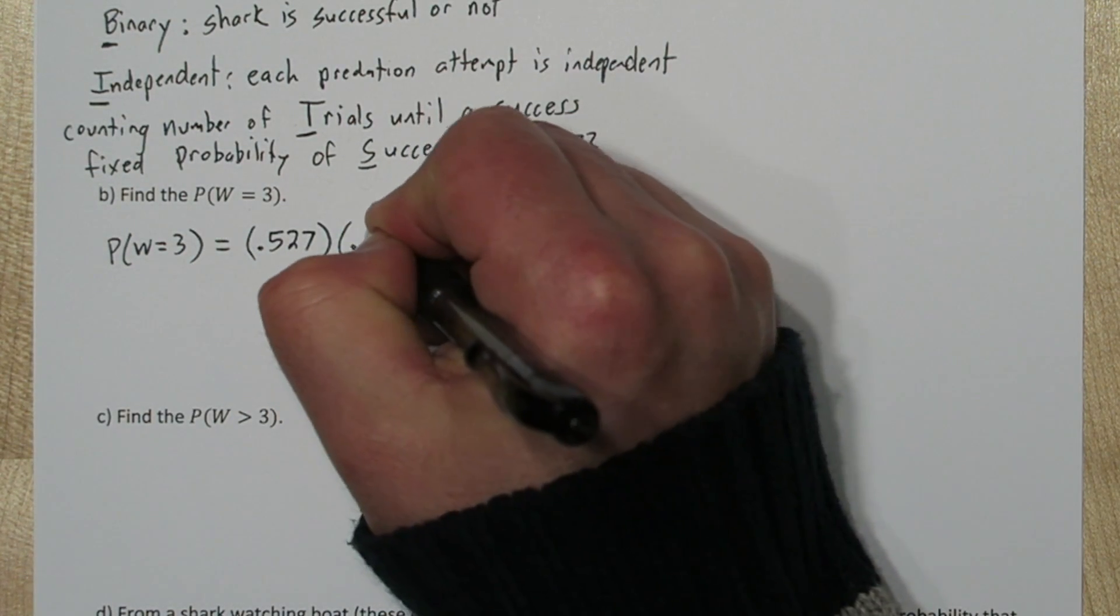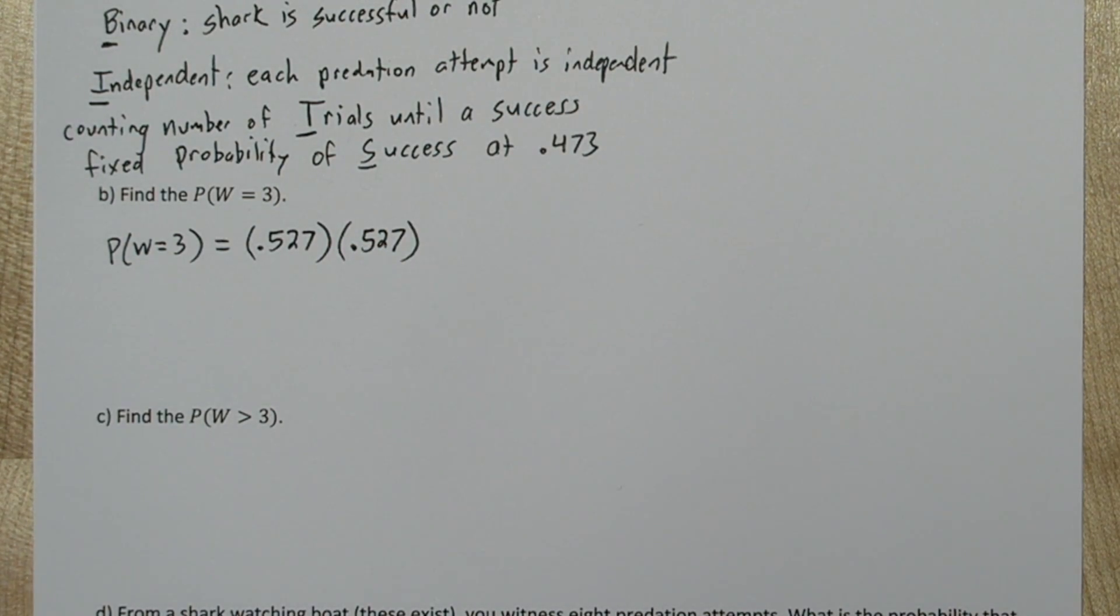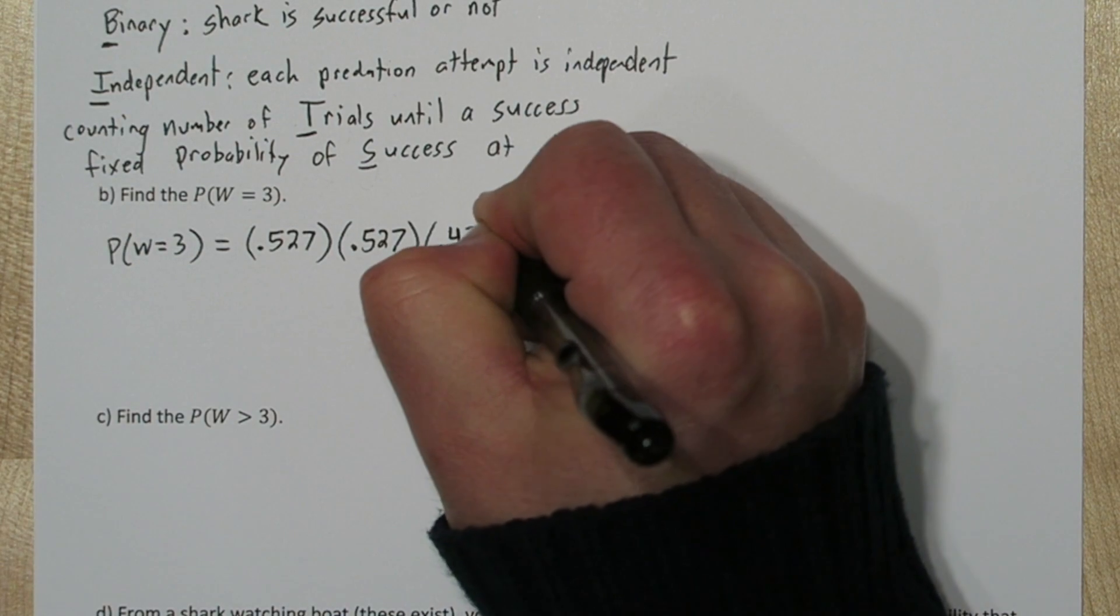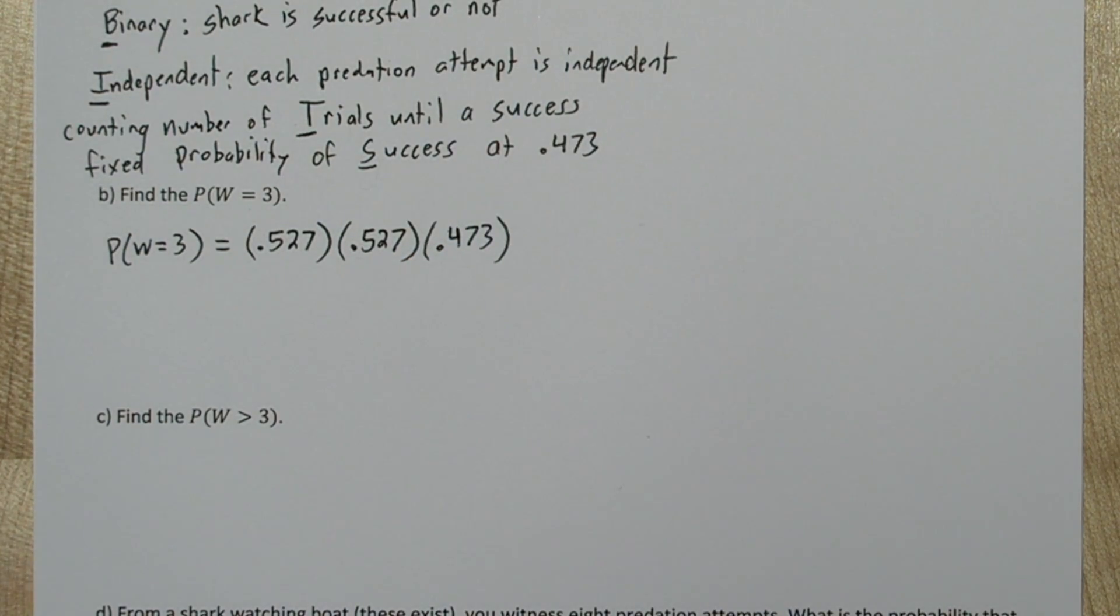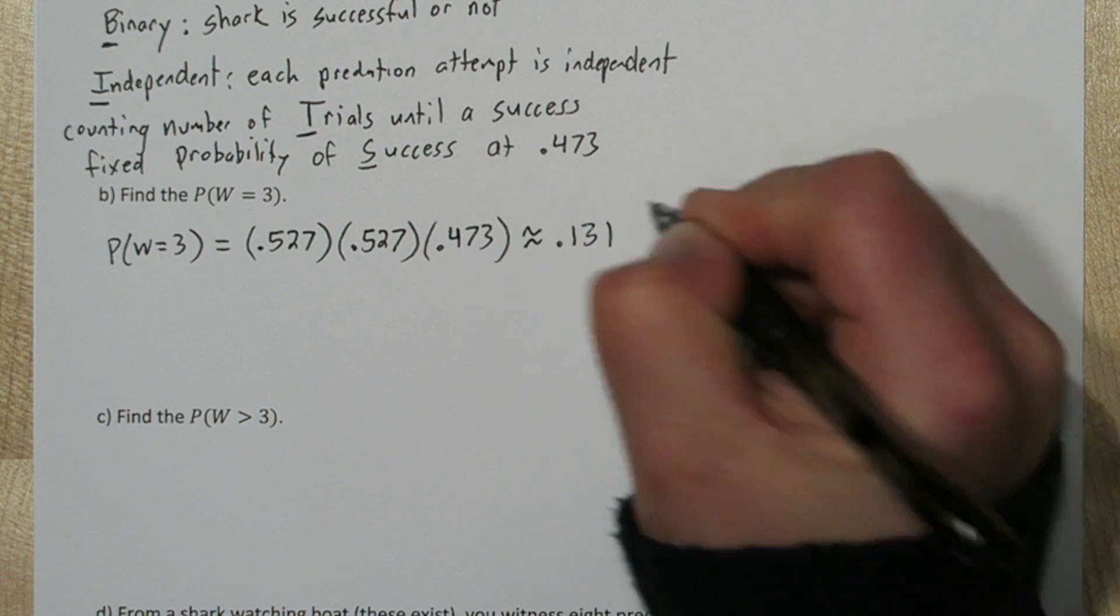Then we have to have another failure. Now since these are independent events, we can just multiply their probabilities. Then on the third attempt, we have to have a success, so we'll multiply the probability of a success. That product turns out to be about .131.